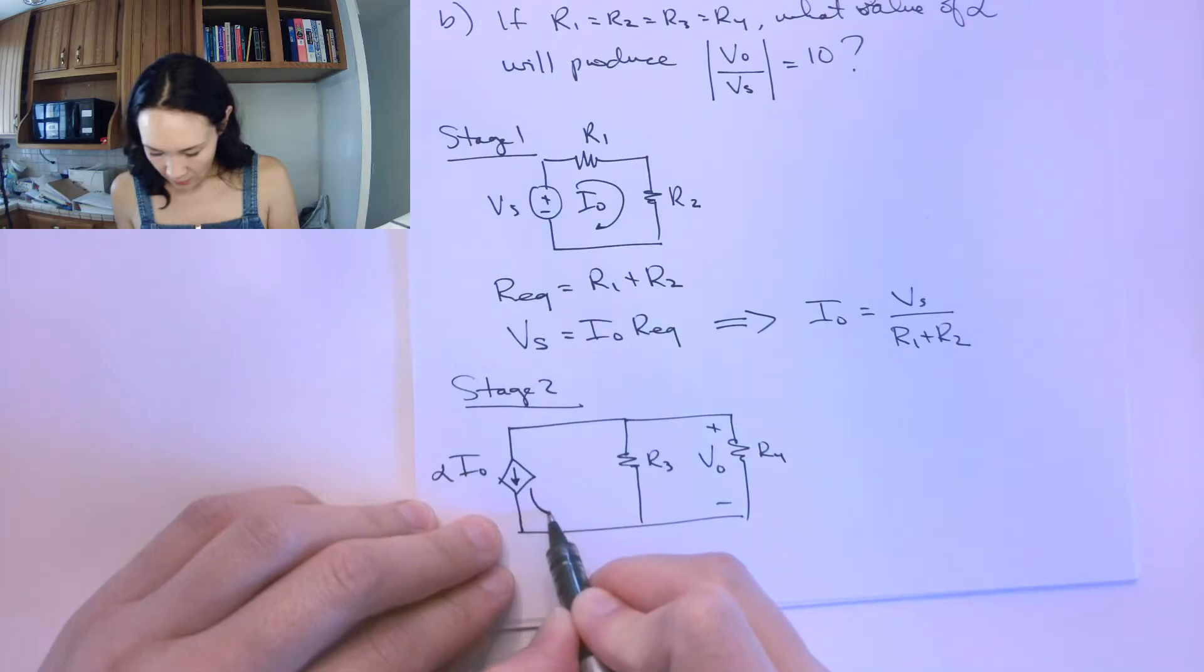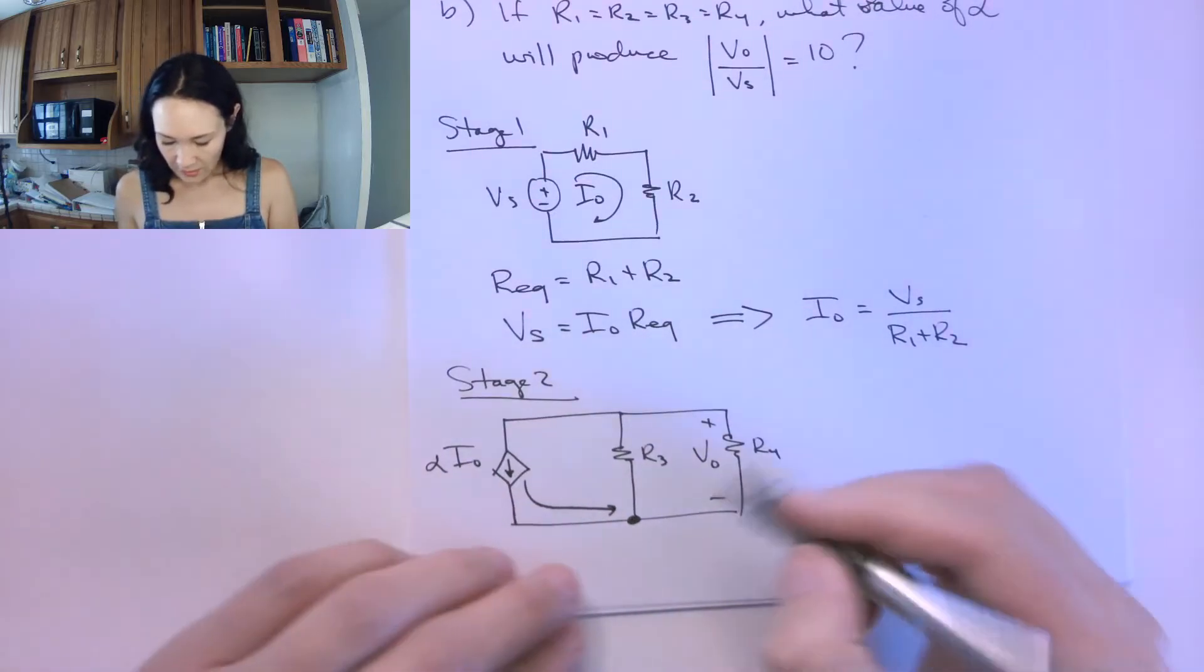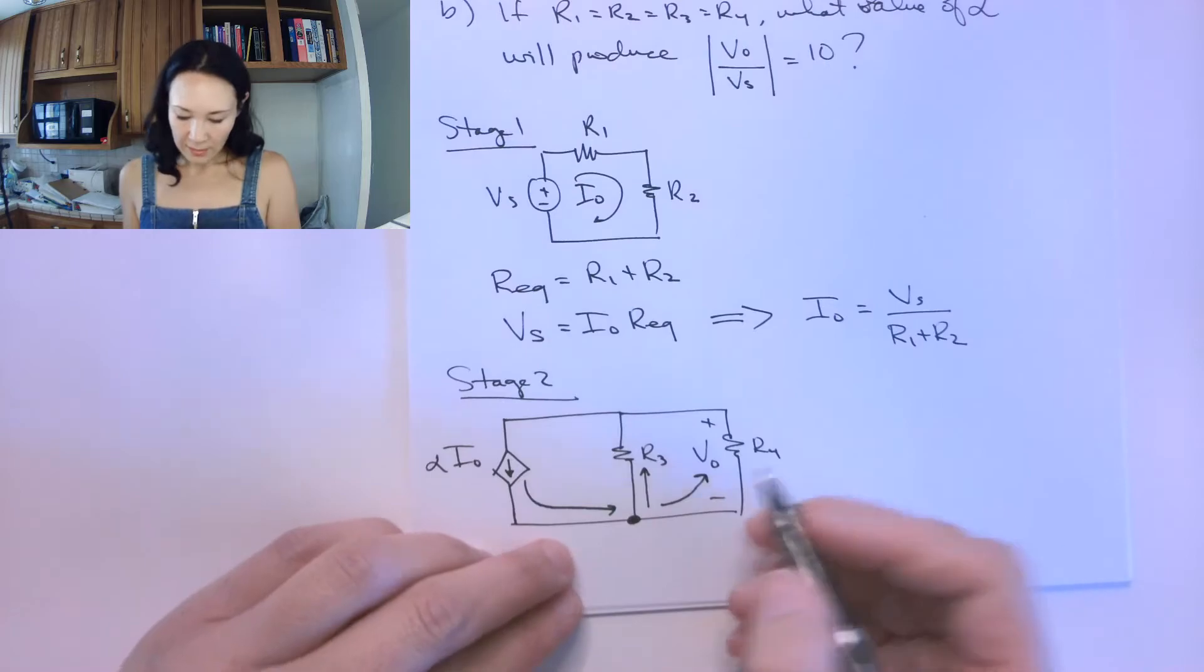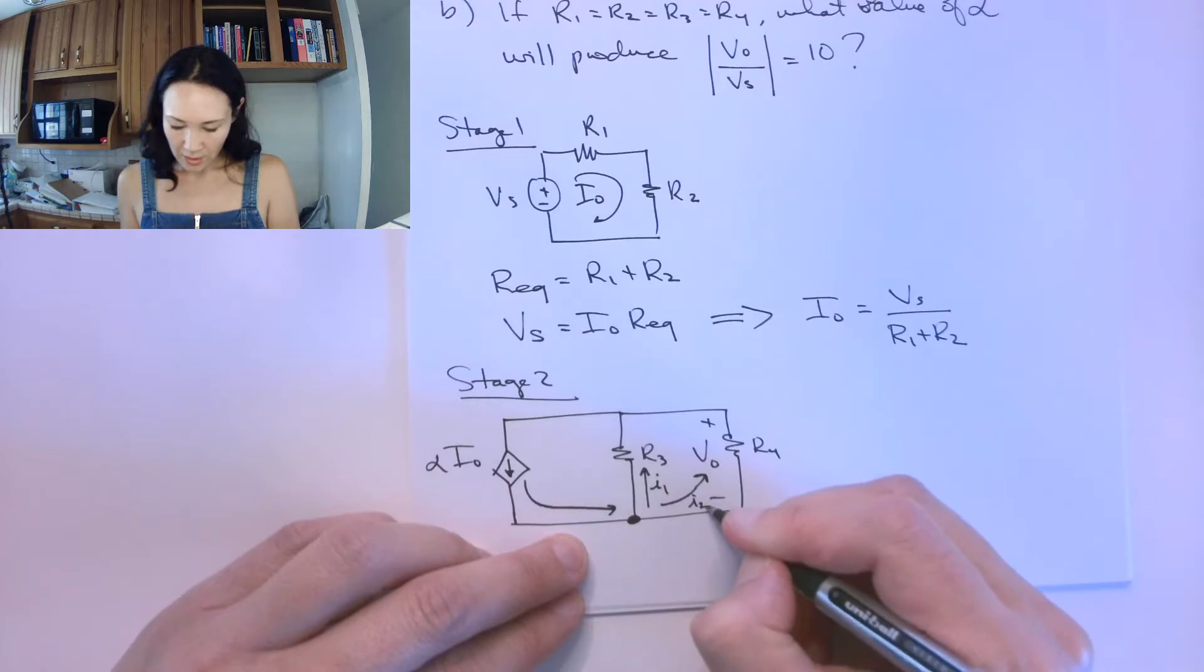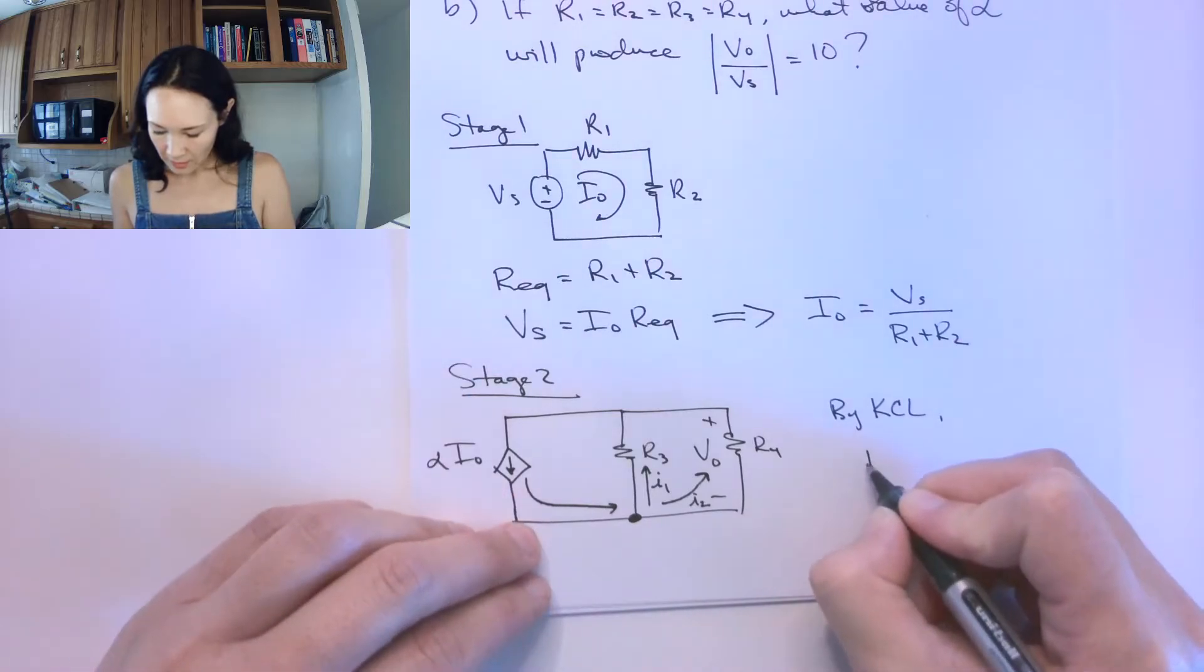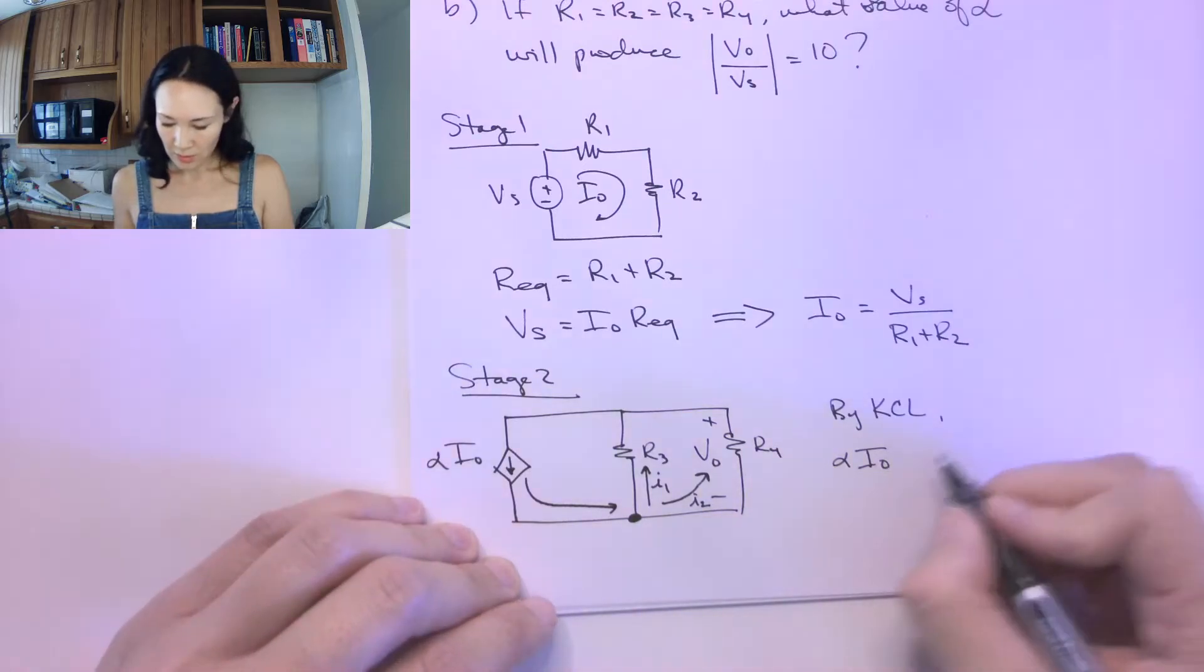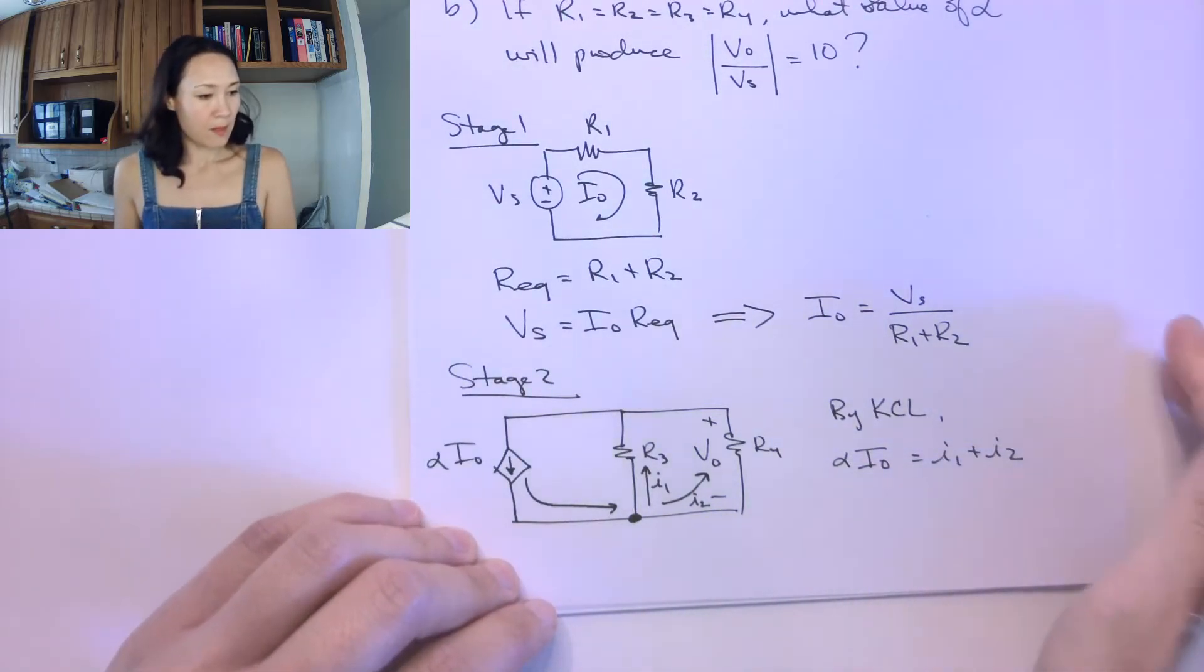The way this current works, the current is coming down in this direction. So it flows towards this node, and then it's going to split up this branch or up this branch. I can just label this as I1 and I'll call this current I2. We know by KCL that alpha I0, the current coming into the node, is equal to I1 plus I2. Great.